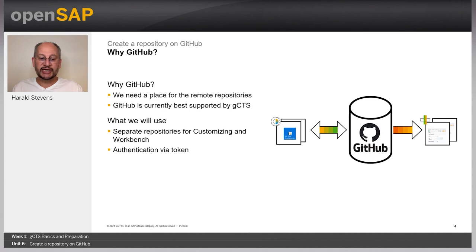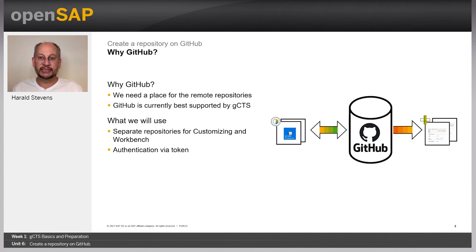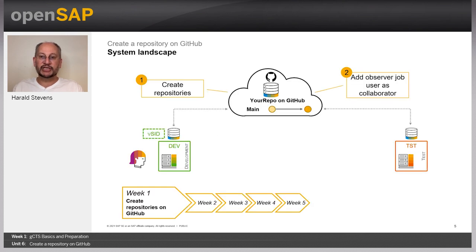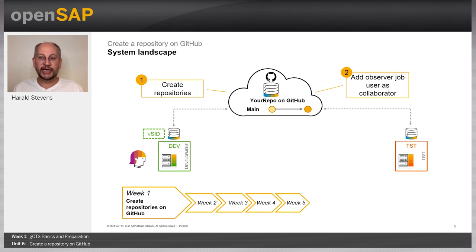There are several incarnations of Git — GitHub is one of the most popular, along with Bitbucket, GitLab, and others. We use GitHub because it's currently best supported by GCTS, though GCTS supports other Git types as well. In this exercise you will create two separate repositories — one for customizing and one for workbench. Additionally, next week we will create a token inside GitHub for authenticating against GitHub from GCTS. The steps are: create two repositories and add an observer job user as collaborator.